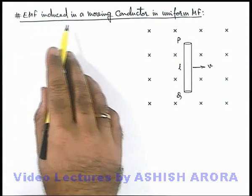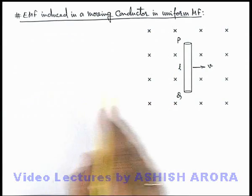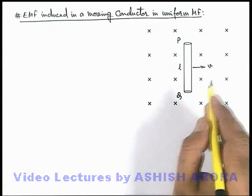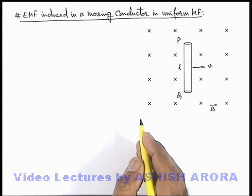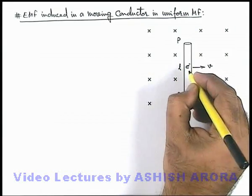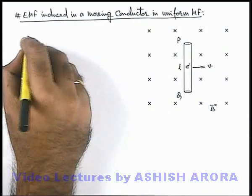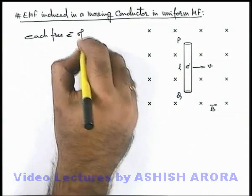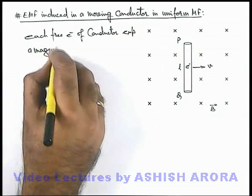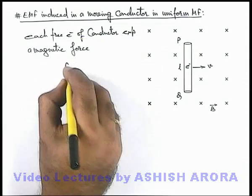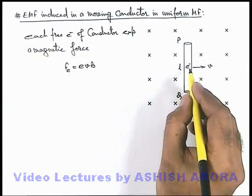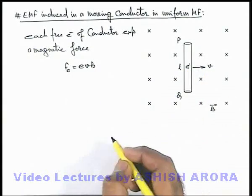Let us study about EMF induced in a moving conductor in a uniform magnetic field. Here we have a uniform magnetic field induction B-vector, in which a conductor of length l is translating with a speed v. As the conductor is moving with speed v, each free electron within the conductor will also move with speed v, and each free electron of the conductor experiences a magnetic force. This magnetic force on each free electron can be written as F_e = evB, since the electron is moving with speed v perpendicular to the magnetic field.